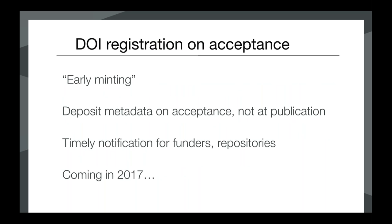Crossref is soon going to be encouraging members to register DOIs on acceptance. Many members are already doing this when they make the accepted manuscript available, but we also want to make it possible for all publishers whether or not they make the accepted manuscript available online. This will give funders more timely notice of publications — they can find out at the point of acceptance that their research has been published — and it will also allow repositories to receive alerts that can trigger deposit into an institutional repository. Expect to see that later this year.